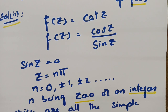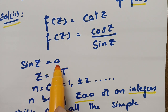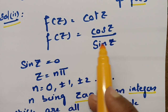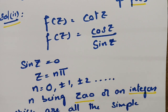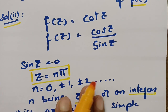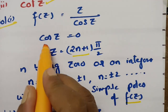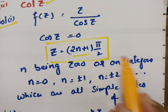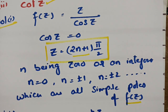So, if you keep n = 0, ±1, ±2, ±3 and so on, sin z will be 0. All the simple poles of f(z) are z = nπ. To summarize: for z/cos z the poles are z = (2n+1)π/2, and for cot z the poles are z = nπ, where n is 0 or an integer.